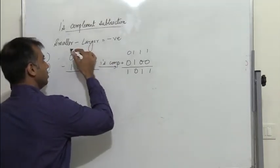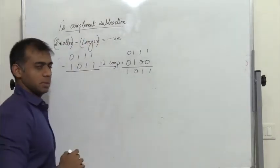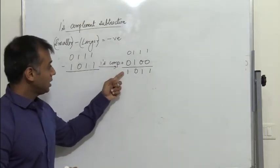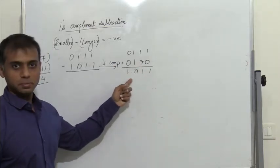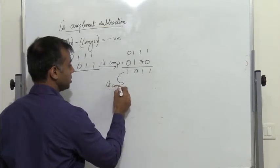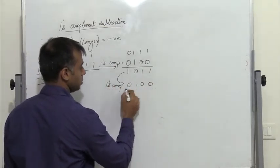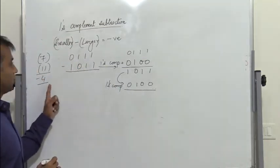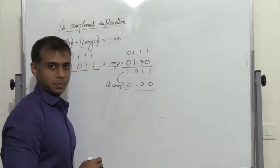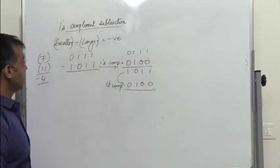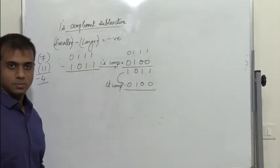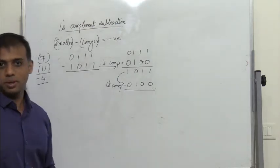When we do smaller number minus larger number and the result is negative, there is no carry obtained, and the added result is in 1's complement form. So we take the 1's complement of 1011, which gives us 0100, corresponding to 4. Since the answer is negative, we attach a negative sign. So 0111 minus 1011 is minus 0100. This is 1's complement subtraction.